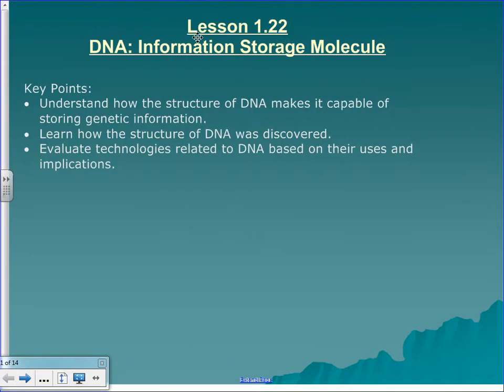We're going to talk about DNA — the structure of DNA — because yesterday we talked about variation and how all the crossing over of chromosomes can lead to variation. We talked about alleles, different forms of genes, and Mendel. Today we're going to look at the cause of all of that: deoxyribonucleic acid, DNA.